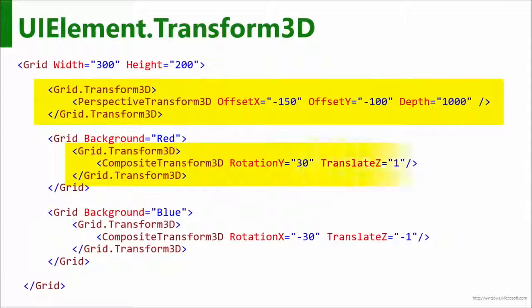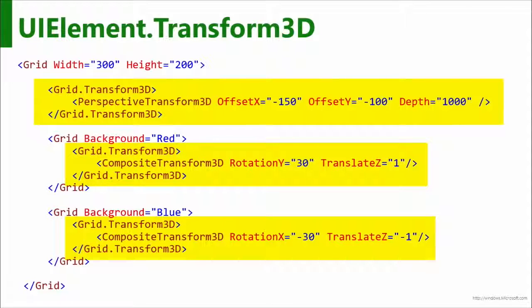The syntax is pretty straightforward. At the top you define a perspective inside the container — the most important thing is setting the depth to 1,000, deciding how deep the scene is. Then you define the placement of children using CompositeTransform3D on each child. You have to do both: set up PerspectiveTransform3D on the parent, then set up CompositeTransform3D on each child. In this case, I'm translating on the Z-axis — a Z of 1 and Z of -1 on the two children. With a depth of 1,000, you wouldn't even know they were separated. But you can play with all of these values.